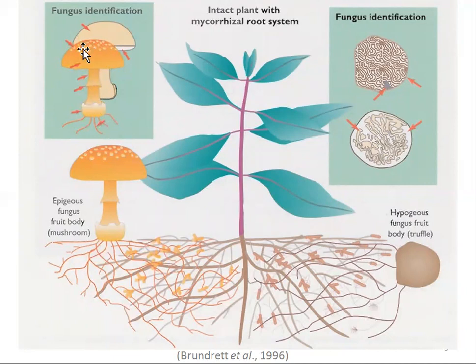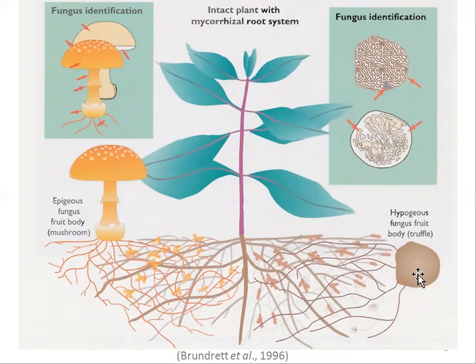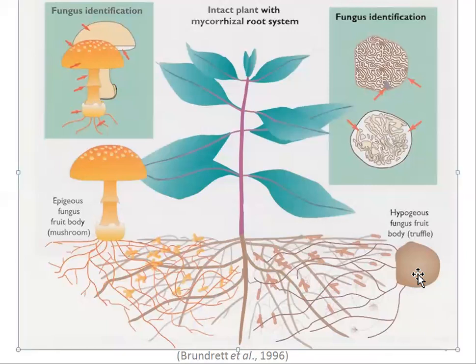Different parts of a mushroom are important for fungal identification: the presence or absence of scales on the pileus or cap, the presence or absence of gills, a ring, rhizomorphs, the shape of the volva. For characterizing ascomycete fungal fruiting bodies, you cut them and observe the inner mycelium and the excipulum — the outer layer or peridium of the tuber species.